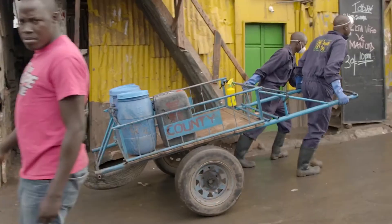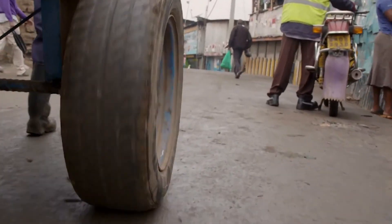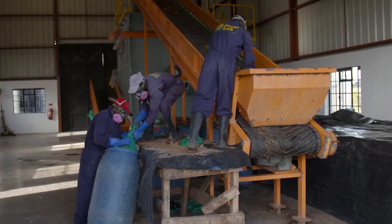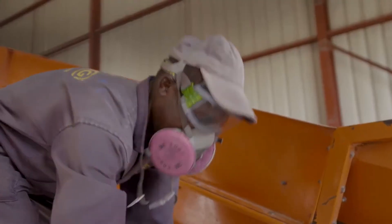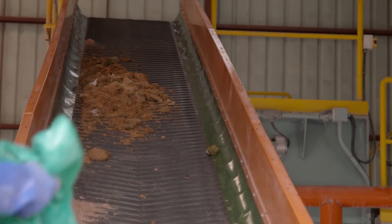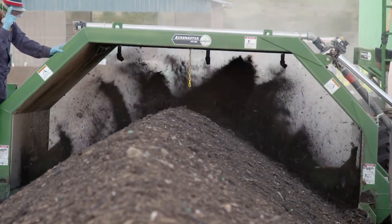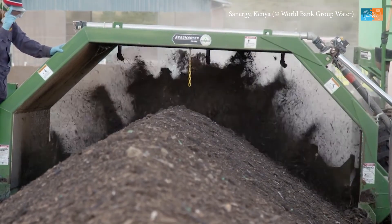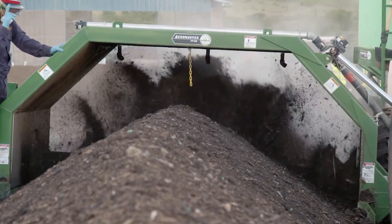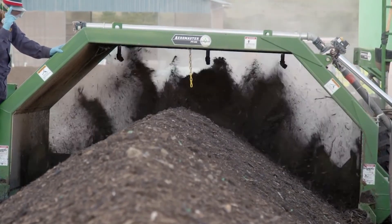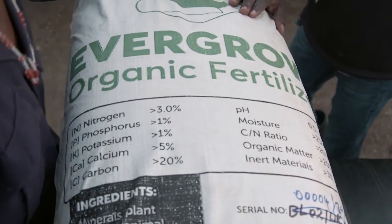Sanergy guarantees daily waste collection for all Fresh Life Toilets. The full container for each toilet is exchanged with an empty container and loaded onto a handcart. The collected waste is then trucked outside the city. The upfront fee for a Fresh Life commercial toilet is about $500, which includes the first year of servicing, with subsequent years being charged at around $70 per year. At the treatment plant, the waste is hygienized by co-composting with sawdust and other carbon sources, which eliminates pathogens. The process takes about six months to achieve a mature fertilizer.